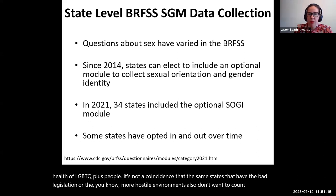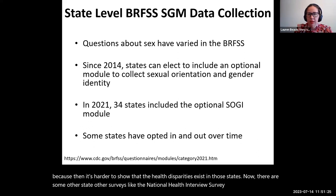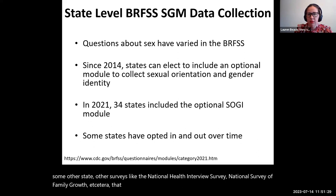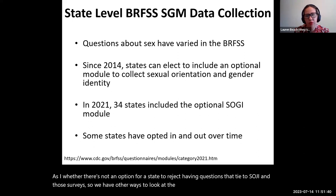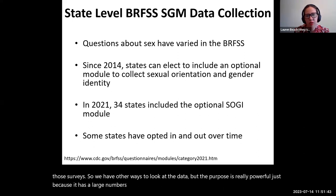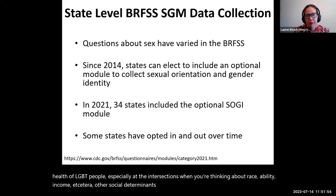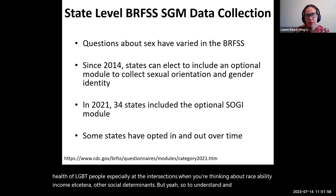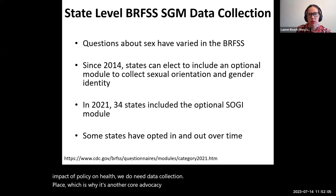It's not a coincidence that the same states that have bad legislation and more hostile environments also don't want to count LGBT people, because then it's harder to show that health disparities exist in those states. There are some other surveys — like the National Health Interview Survey and National Survey on Family Growth — where there's no option for a state to reject SOGI questions. So we have other ways to look at the data, but the BRFSS is really powerful because it has the largest numbers and the most statistical power to understand the health of LGBT people, especially at the intersections of race, ability, income, and other social determinants. To understand and document the impact of policy on health, we do need data collection in place — which is why it's another core advocacy issue.